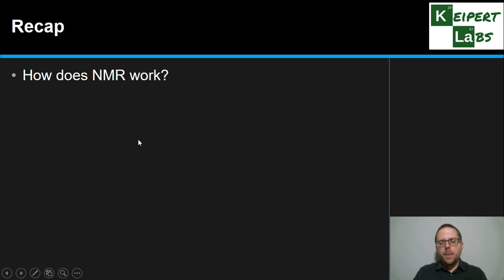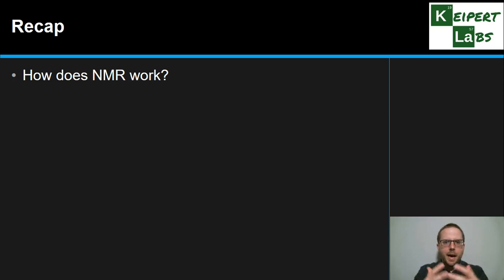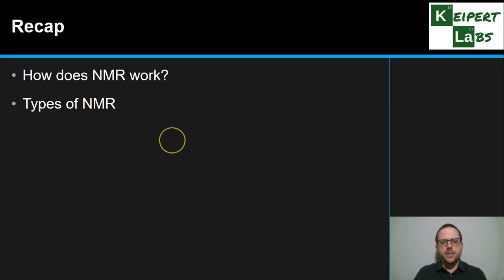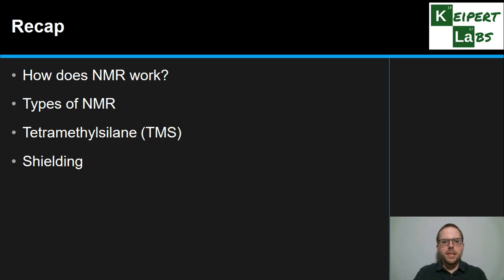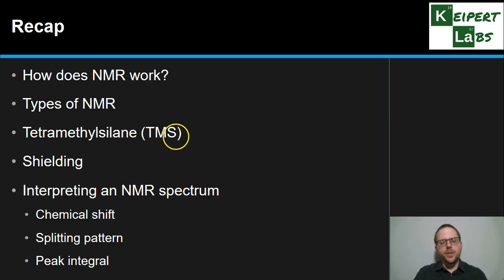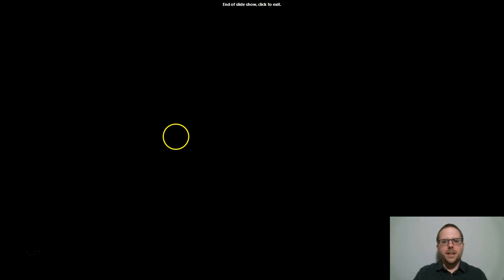Thank you for your patience through this long video. We covered how NMR works — the principles around magnetic fields and radio wave energy used to get information from a given nucleus. We looked at proton and carbon-13 NMR for useful molecular structure information, the use of tetramethylsilane or TMS as our internal standard, the concept of shielding based on electron density, and three aspects of interpreting an NMR spectrum: chemical shift, the splitting pattern, and the peak integral or area under the curve. Thanks very much for watching — don't forget to like and subscribe.